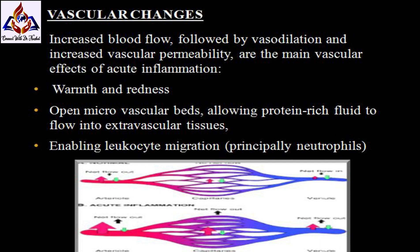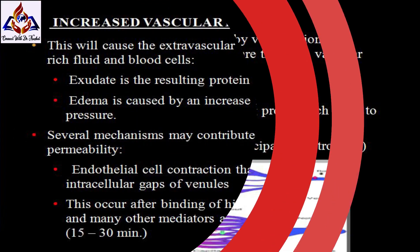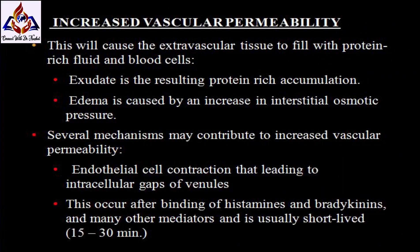Vascular changes include increased blood flow followed by vasodilation and increased vascular permeability, which are the main vascular effects of acute inflammation. Warmth and dilation open microvascular beds, allowing protein-rich fluid to flow into extravascular tissues, enabling leukocyte migration — principally neutrophils. Increased vascular permeability causes extravascular tissue to fill with protein-rich fluid and blood cells, forming an exudate.